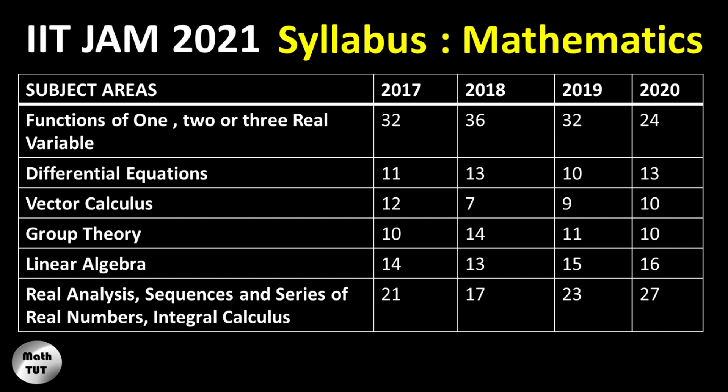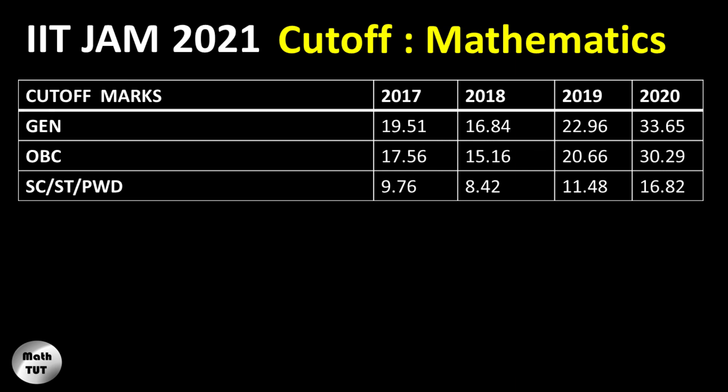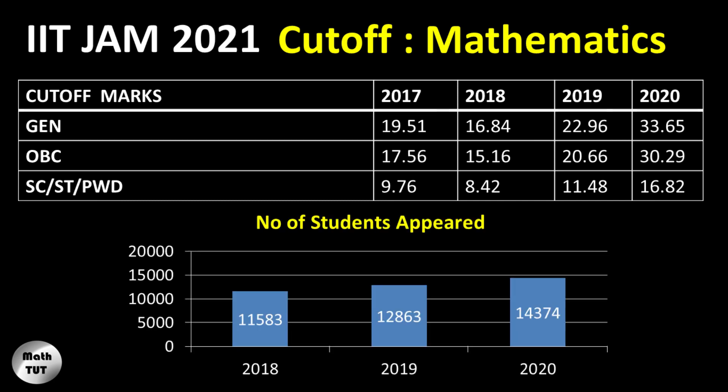If you look at the cutoff for the Mathematics examination, there has been a slight change — a sudden rise in cutoff marks compared to the last three years. One reason could be the change in the type of questions or mark distribution. The second reason is that the number of students writing the examination is increasing year by year. Comparing with 2018, there has been an increase of at least 1,000 to 1,500 students, and if you draw a curve using the data points, it clearly has a positive slope.